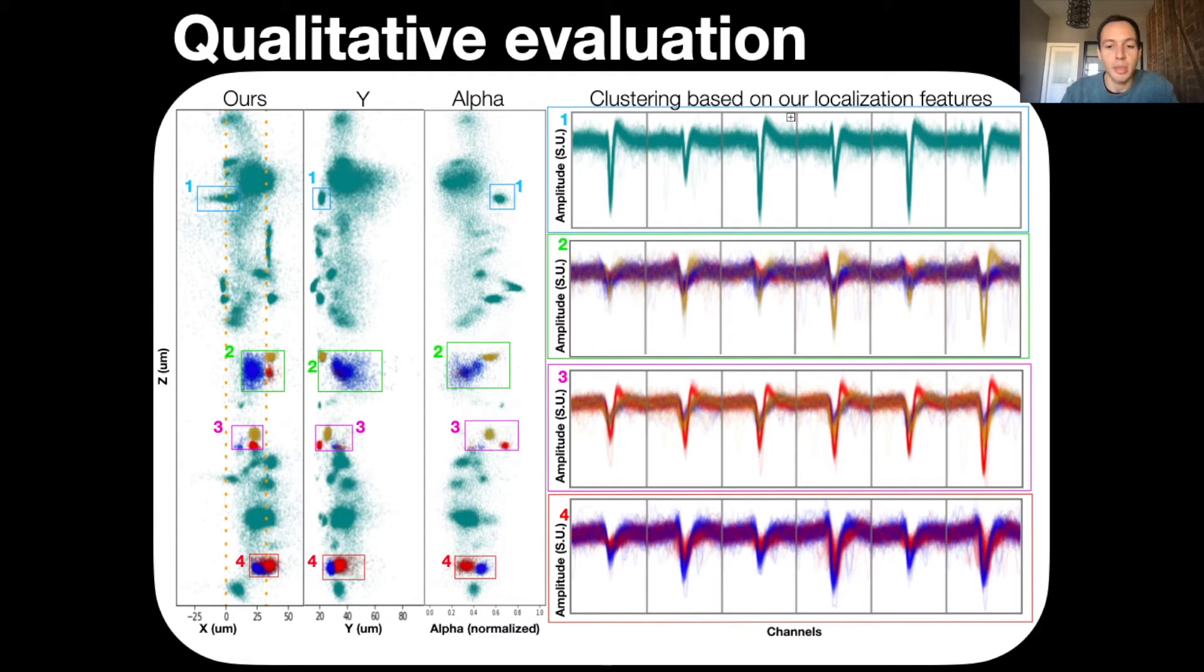We've isolated some of these point sets. We've run Gaussian mixture model clustering on them so that it would reflect the visual impression, and we've looked at the waveforms corresponding to each cluster. In these four boxes that we've explored, we see different localization-induced clusters, and on the right panel we see the waveforms for each cluster that actually show distinctive shapes, showing that each of these localization-induced clusters correspond to a different unit.